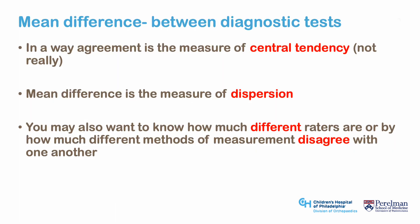While kappa and ICC assess agreement between measures, mean difference assesses the average difference between measurements — similar to how standard deviation is a measure of dispersion and mean and median are measures of central tendency. These are useful to assess how two different techniques compare at measuring the same thing, assuming they use the same units or units that can be normalized.